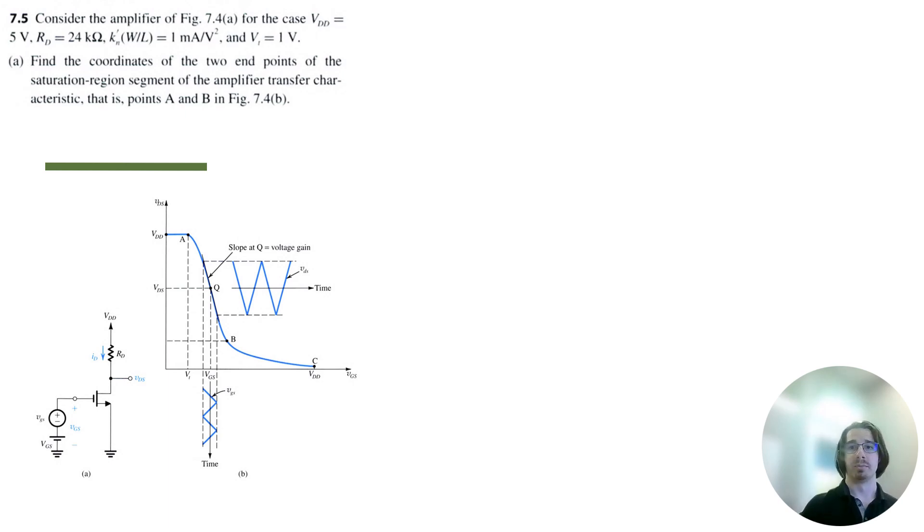Let's solve Problem 7.5 for Microelectronics Circuits 8th Edition by Sedra and Smith. Consider this amplifier for the case that VDD equals 5 volts, RD equals 24 kilo-ohms, Kn' times W divided by L is equal to 1 milliamp per volt squared, and VT equals 1 volt.